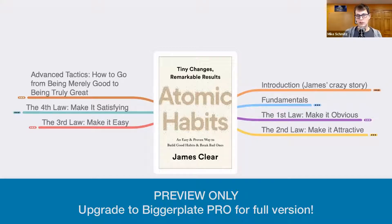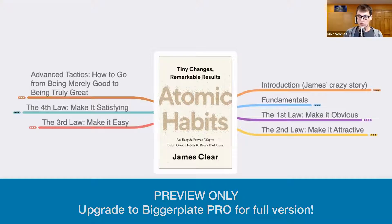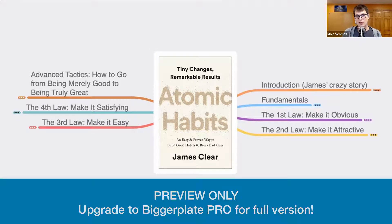I prefer to create the nodes for the chapters as I go. But let's just say chapter one is going to be under Fundamentals. So I'm going to select the Fundamentals node, then add a new child node underneath that for chapter one. I'll show you what that looks like in a little bit. So that's the second type of reading.